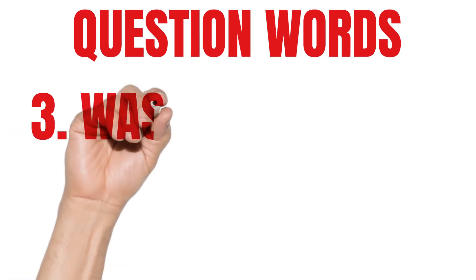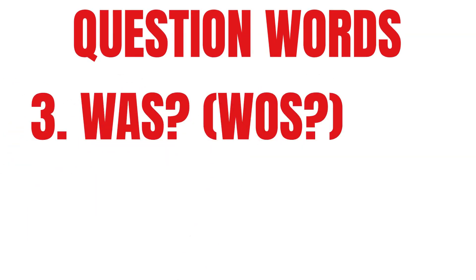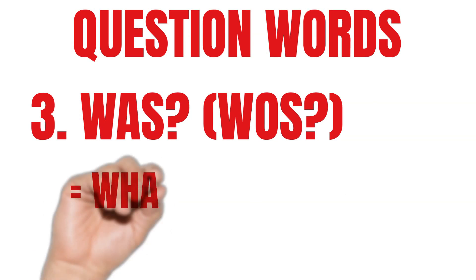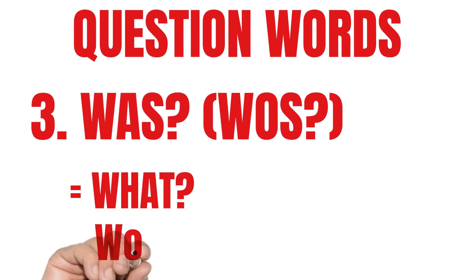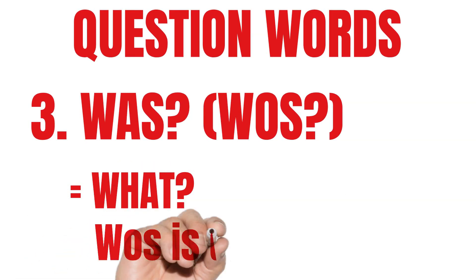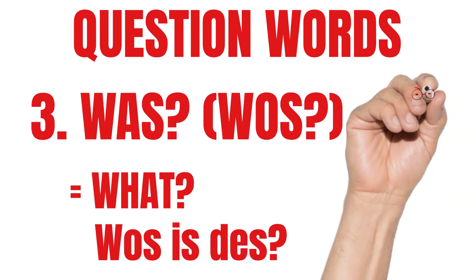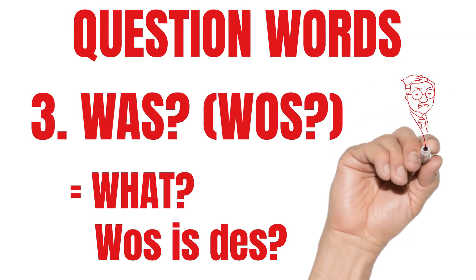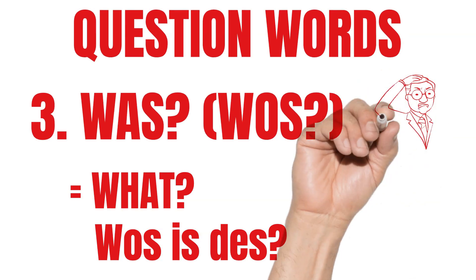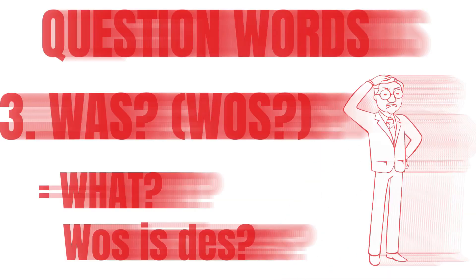Was. Was means "what" in English. For example, "Was ist dies?" — in Austrian German. In standard German: "Was ist das?" And in English: "What's that?"